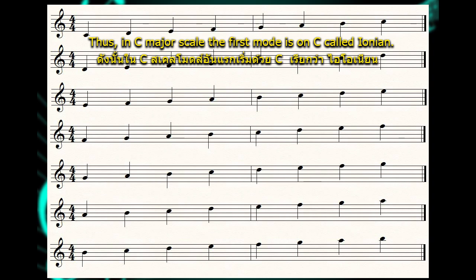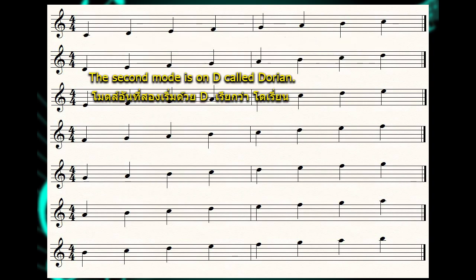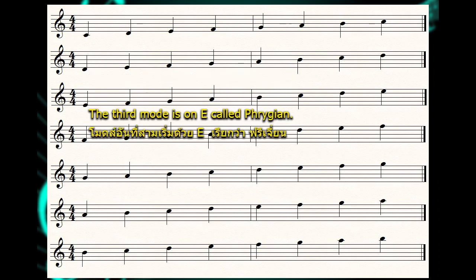Thus, in the C major scale, the first mode is on C, called Ionian. The second mode is on D, called Dorian. The third mode is on E, called Phrygian.